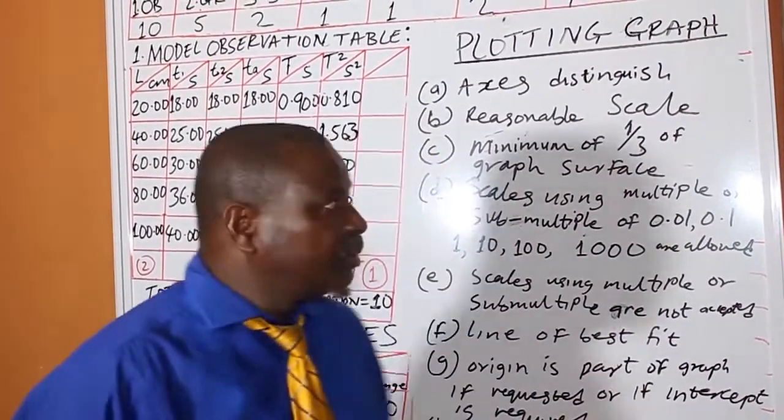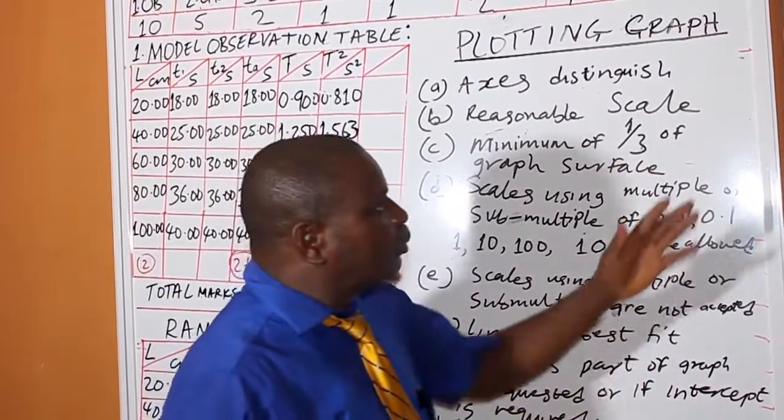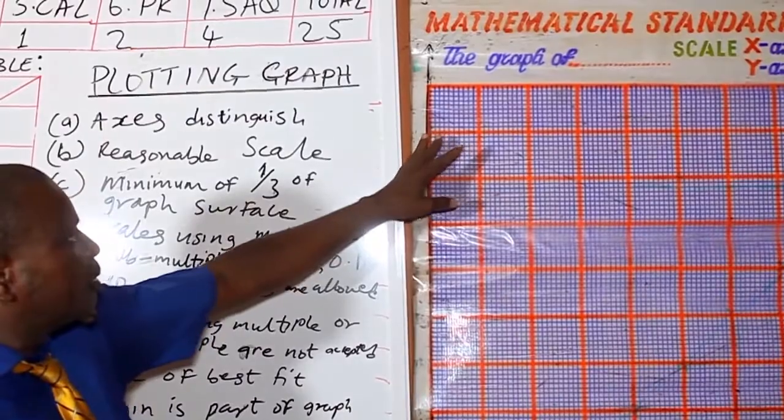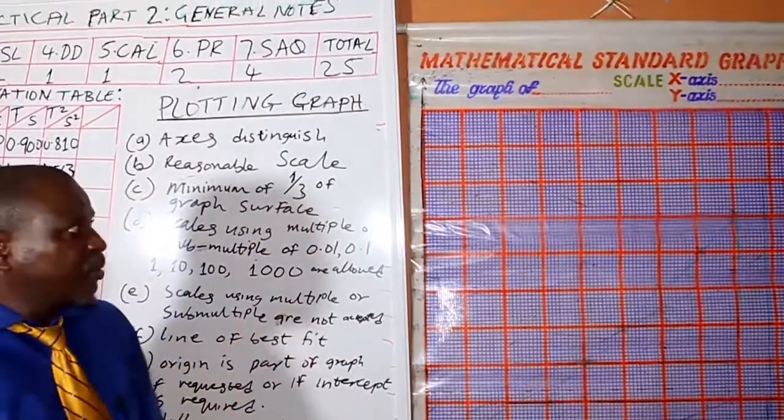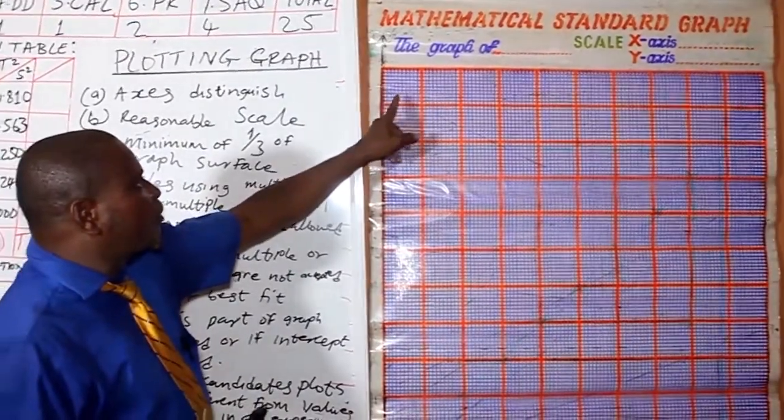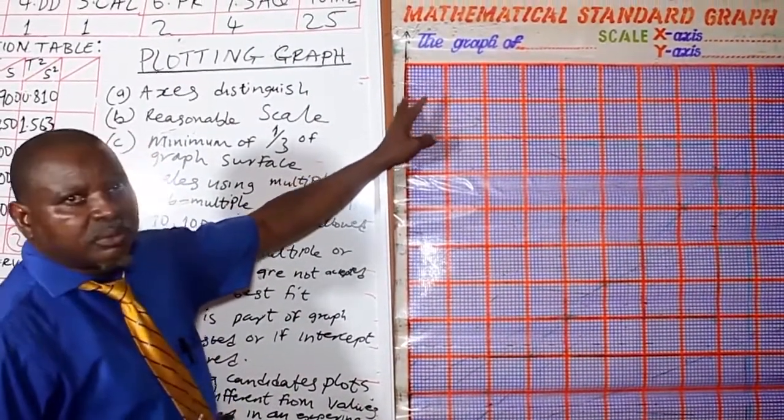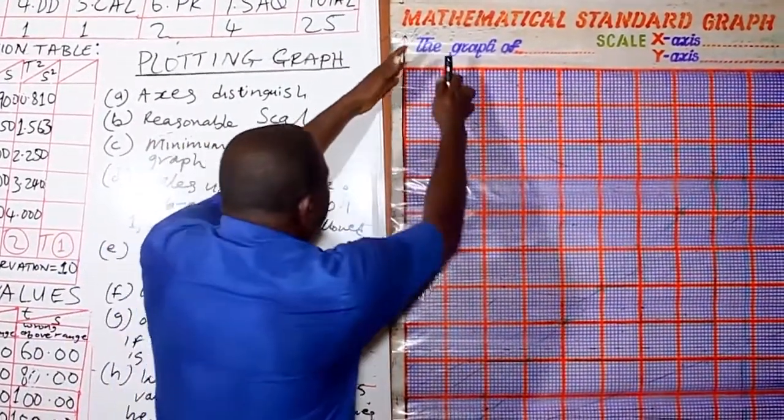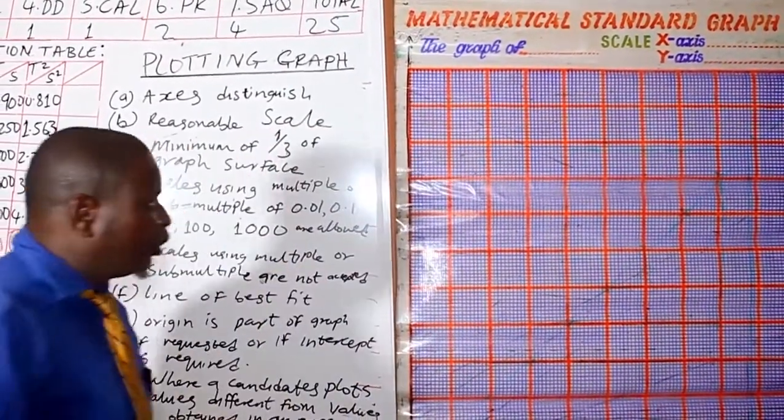Plotting graphs. If you observe this graph very well, you see that there are two colors. There are small squares drawn with purple color, while big squares are drawn with orange color.